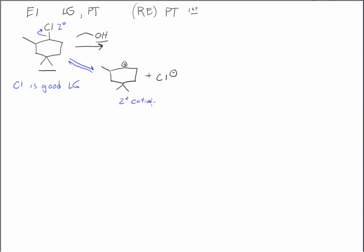We need to always evaluate secondary cations as potential rearrangement players. So can this cation rearrange to form a more stable cation? Well, if we put the cation at this carbon, I think we're going to get a secondary cation. So that's not going to help us.